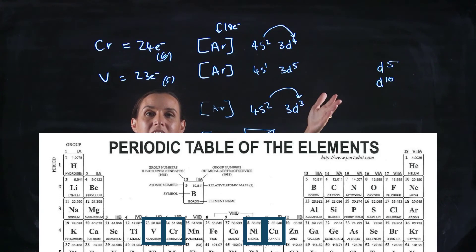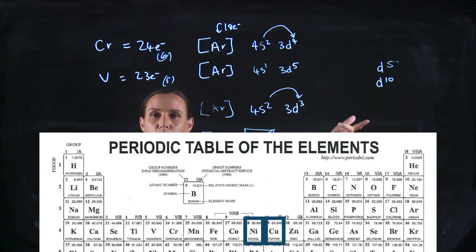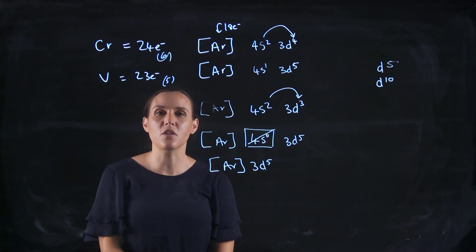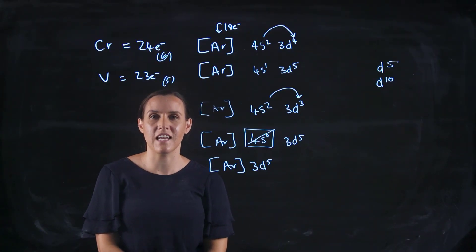And then when you're getting to that magic number of 10, so if it's got d8, it's going to take 2. If it's got d9, it's going to take 1 to reach that number 10. So promoting from the S up to the D to give it an overall lower energy confirmation. So thank you for watching my video and see you next time.